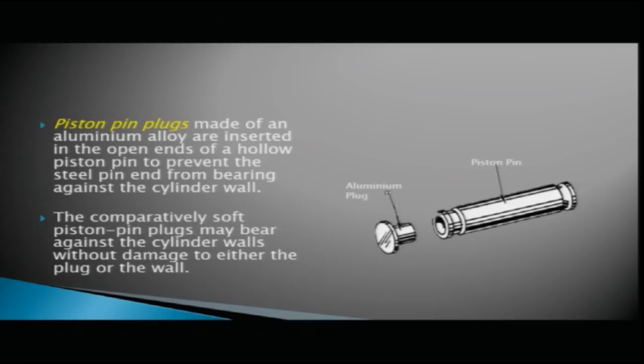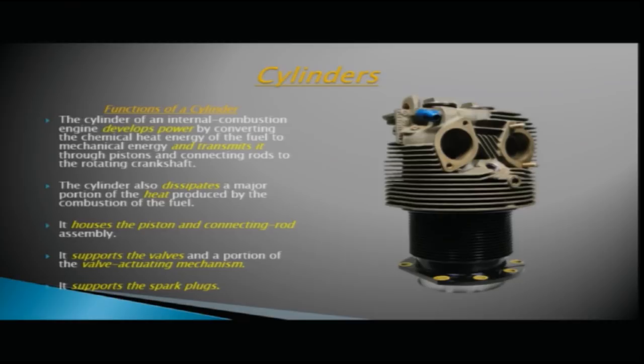Next are cylinders — the most important part of an engine. The cylinder of an internal combustion engine develops power by converting the chemical heat energy of the fuel to mechanical energy and transmits it through pistons and connecting rods to the rotating crankshaft. The cylinder also dissipates a major portion of the heat produced by the combustion of the fuel.